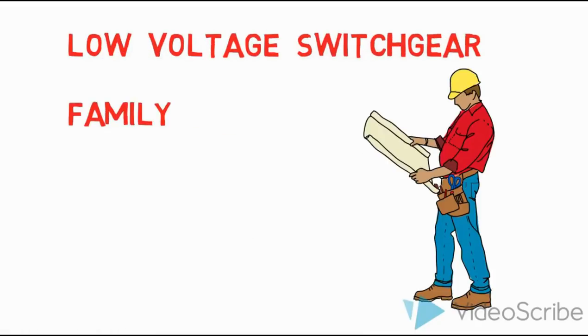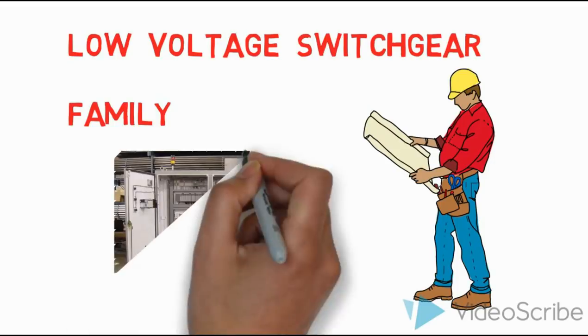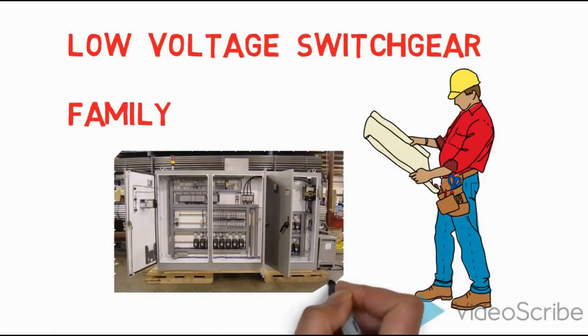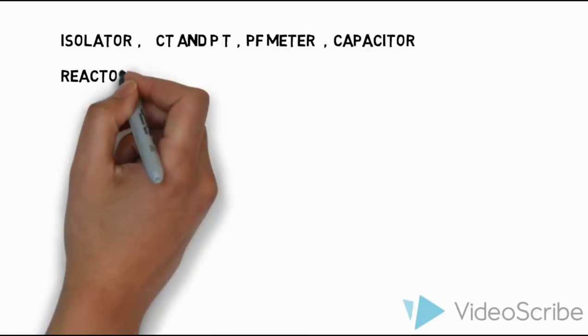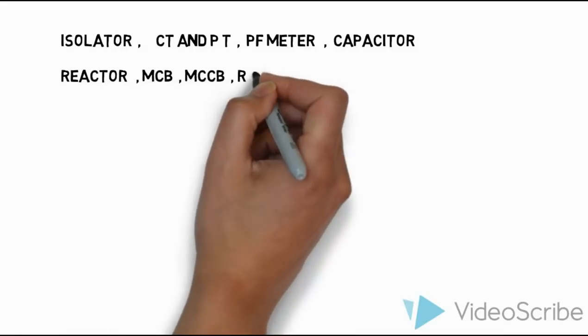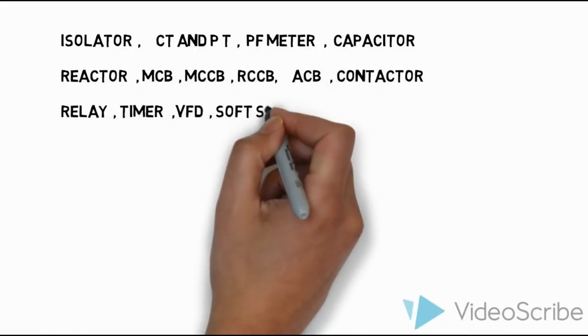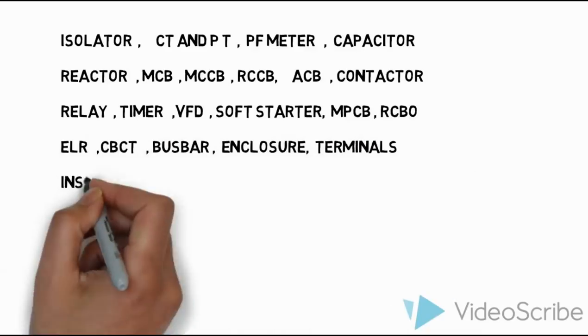In this video, we will see the families of low voltage switch components and functionality. Most beginners will find the low voltage switch helpful. The components include: Isolator, CTP, T-PF, Capacitor, MCB, MCCB, RCCB, etc. We will see all components one by one by category.